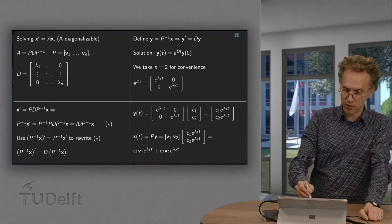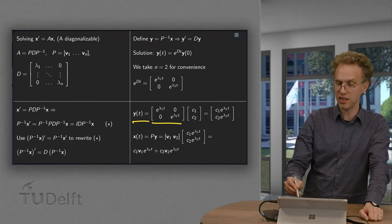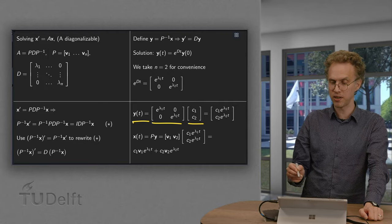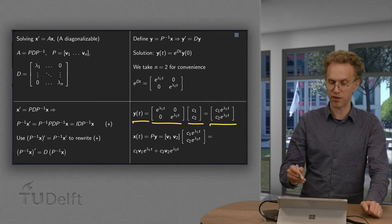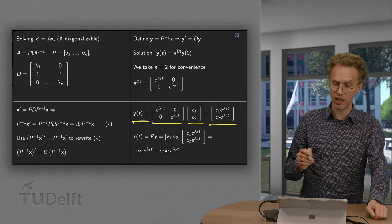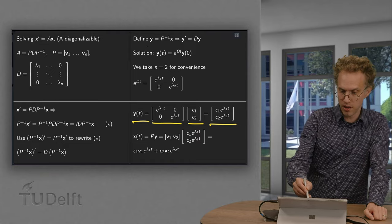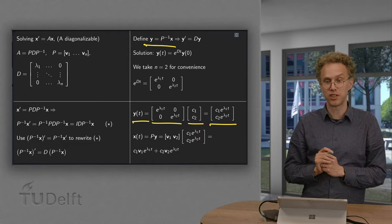Then we know y of t equals e to the power dt times some initial condition. We can multiply this out, and there we have our y of t. And then we know x of t because we know y equals p inverse times x, so x equals p times y.